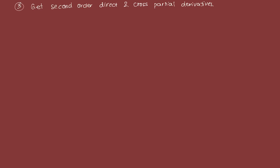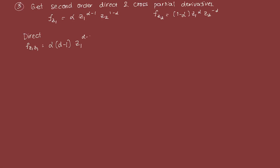Next, we get the second-order direct and cross partial derivatives. The first-order derivative with respect to Z1 is alpha times Z1 raised to alpha minus 1, Z2 raised to 1 minus alpha. The direct second-order partial FZ1Z1 is alpha times alpha minus 1, times Z1 raised to alpha minus 2, times Z2 raised to 1 minus alpha, which simplifies to alpha squared minus alpha, times Z1 raised to alpha minus 2, times Z2 raised to 1 minus alpha.